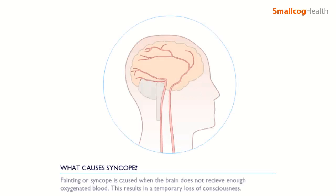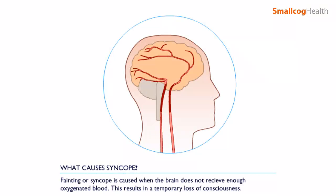What causes syncope? Fainting, or syncope, is caused when the brain does not receive enough oxygenated blood. This results in a temporary loss of consciousness.